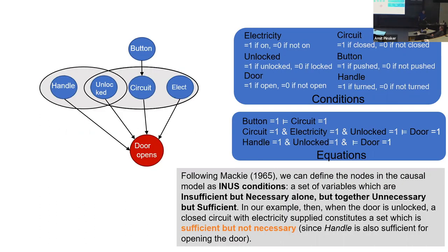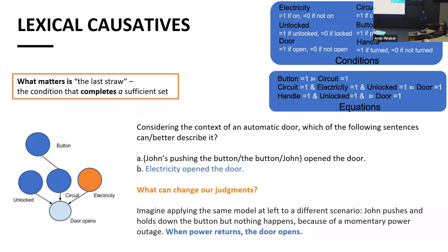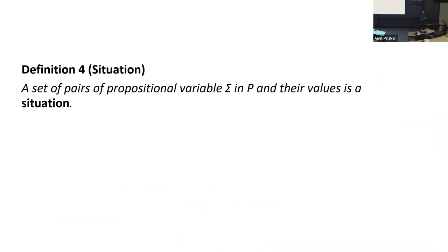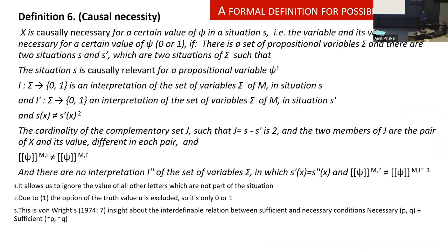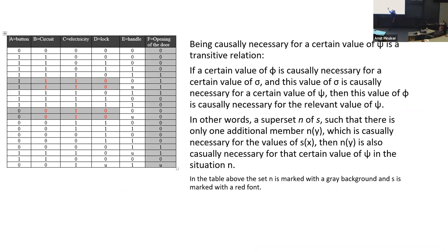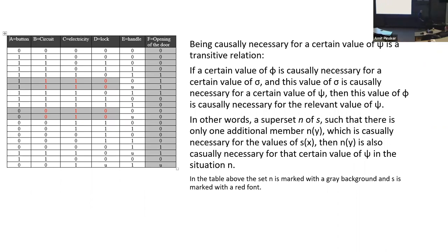We can actually take this as a logical system and translate it to truth tables — not logical connectives, but it works exactly the same way. We match the relationship between these elements and the results, whether zero or one. So this structural equation model is a way to capture the relationship between different conditions. Different sets of conditions can be sufficient, and each sufficient set is sufficient but not necessary — because there may be another way to achieve the effect.